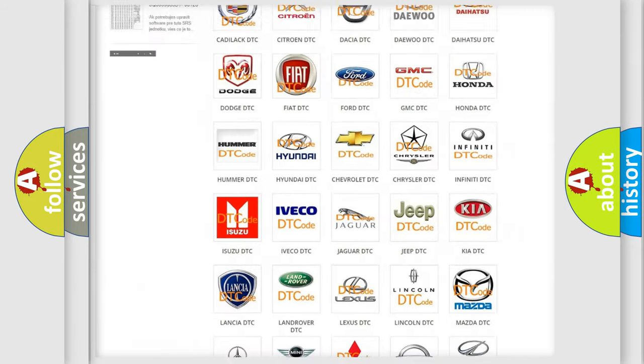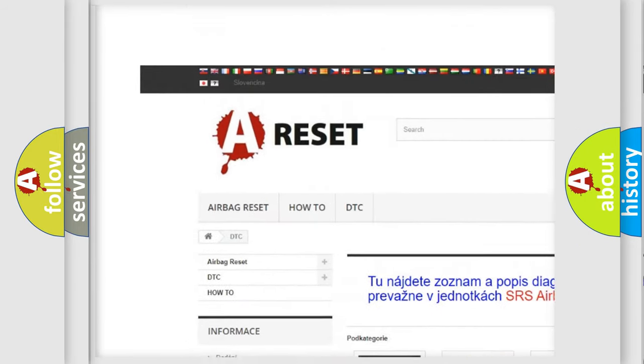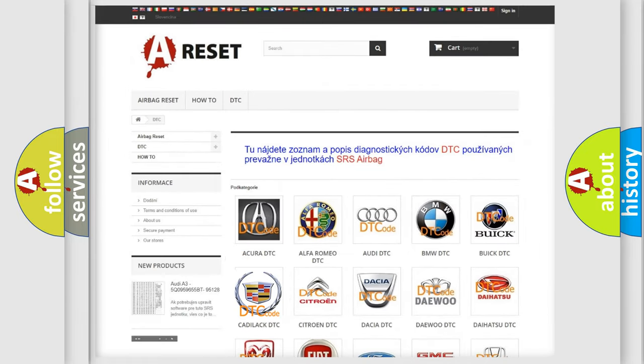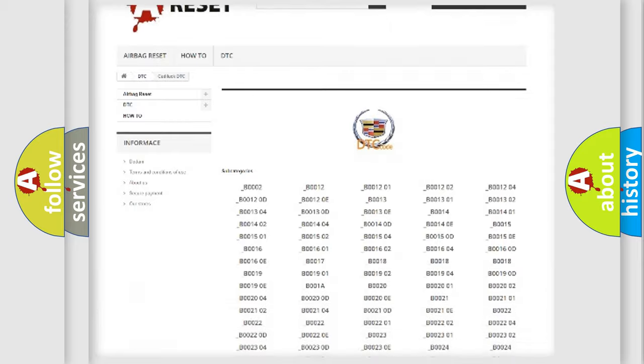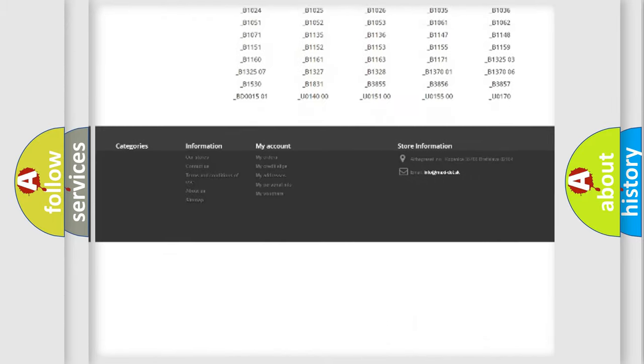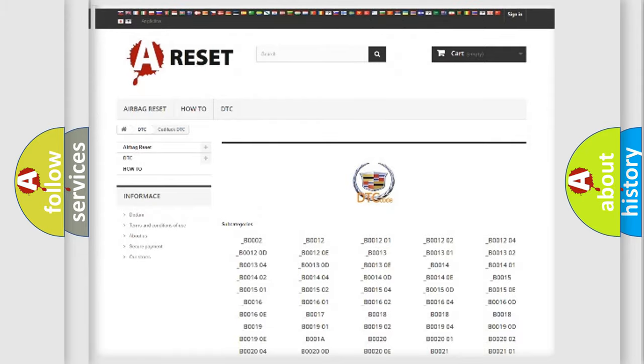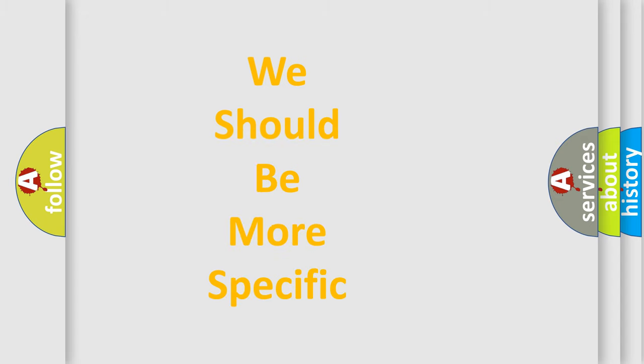Our website airbagreset.sk produces useful videos for you. You do not have to go through the OBD2 protocol anymore to know how to troubleshoot any car breakdown. You will find all the diagnostic codes that can be diagnosed in Cadillac vehicles, also many other useful things. The following demonstration will help you look into the world of software for car control units.